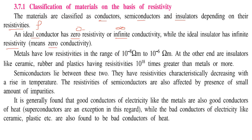Metals have low resistivity, from 10 to the power minus 8 ohm meter to 10 to the power minus 6 ohm meter. At the other end, insulators like ceramic, rubber, and plastic have resistivity 10 to the power 18 times greater than metals, or more. Semiconductors are somewhere in between these two.